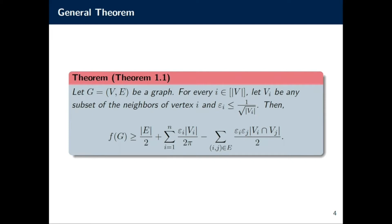then you're guaranteed to get a surplus of at least the sum of epsilon_i |V_i| over 2π minus the sum of epsilon_i epsilon_j |V_i ∩ V_j| over 2 for all vertices i and j that are neighbors of each other in G.